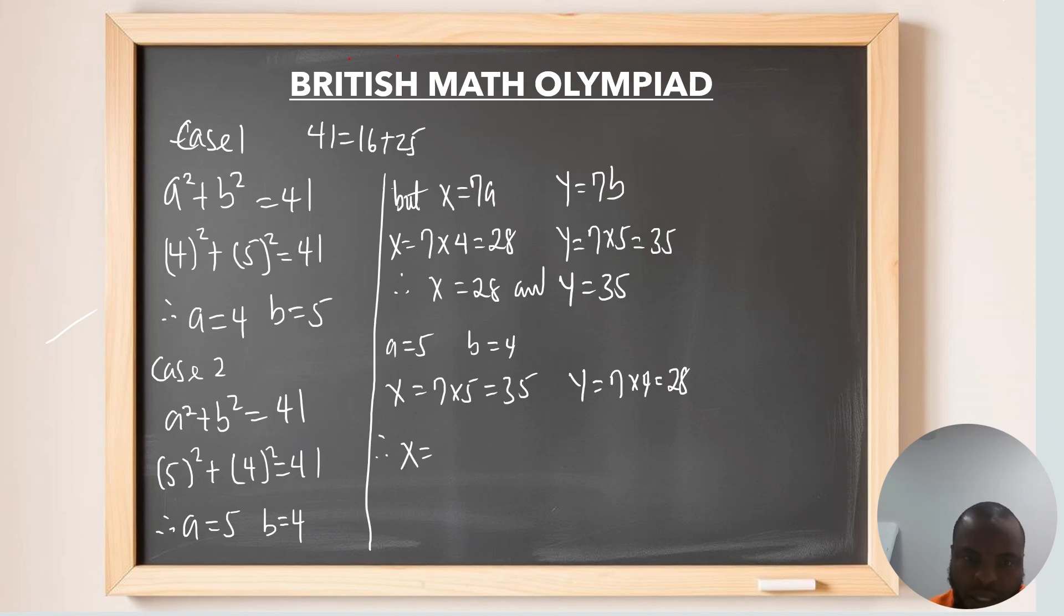Therefore, the value of x can be 28 or 35. And the value of y can be 35 or 28. So, our x plus y. Either one of the two values is still going to be the same. This is going to be 28 plus 35, which is going to be 63. Alternatively, if you can say that x and y, using case 2, is 35 plus 28, this is still going to be 63.